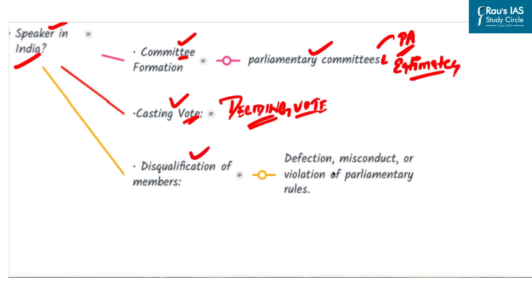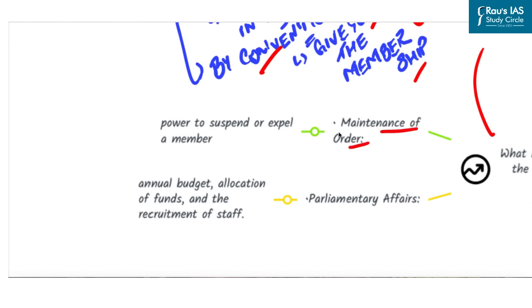Next is disqualification of members. Speaker has the power to disqualify a member of the Lok Sabha or State Legislative Assembly on the grounds of defection, misconduct or violation of parliamentary rules. There's a question that who has the power to disqualify a member of the Lok Sabha on the grounds of defection. There are two options - President and Speaker. The right answer is Speaker, who has the power to disqualify a member of the Lok Sabha on the grounds of defection. Moving on to the next point, that is maintenance of order. The Speaker has the power to suspend or expel a member who violates the rules of the House or behaves in a disorderly manner.